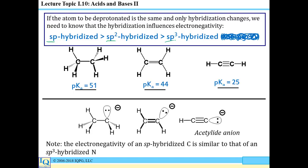If we look at a species with only SP3 hybridized carbons, the pKa is 51. A much stronger acid is reflected in ethylene with only SP2 hybridized carbons. But if you remove a proton from an SP hybridized carbon — like in a terminal alkyne — you get an acetylide-type anion, where the negative charge is on an SP hybridized carbon. Since that's the most electronegative of the carbons, it's also the most acidic, many times more acidic than the corresponding alkene.